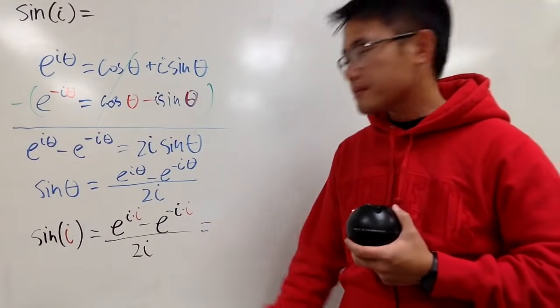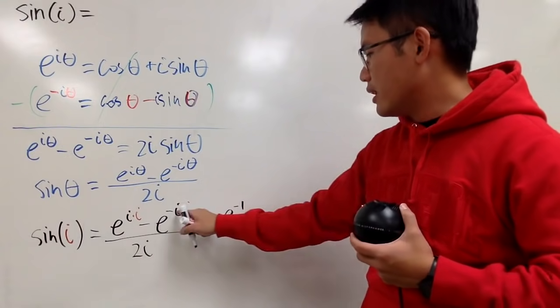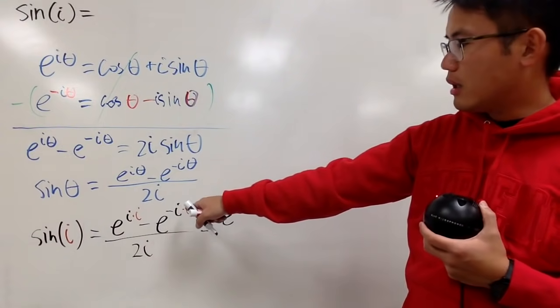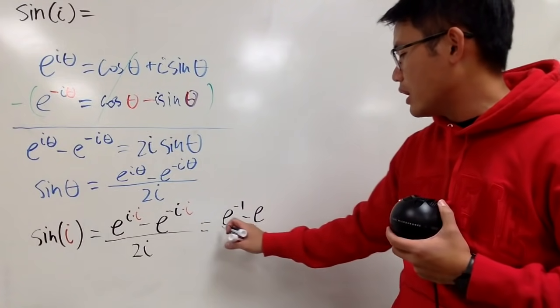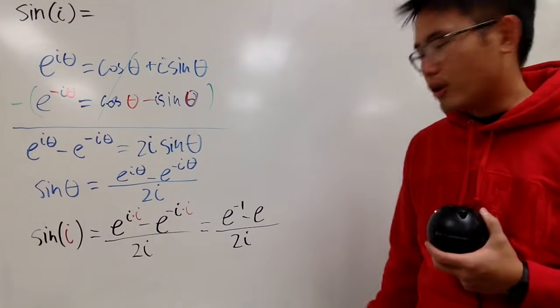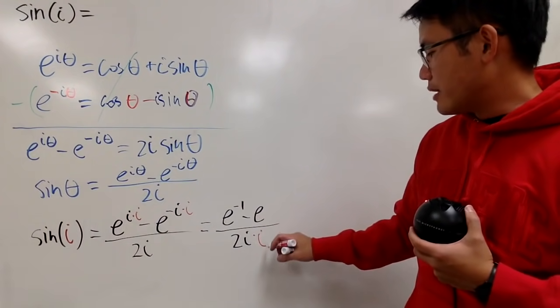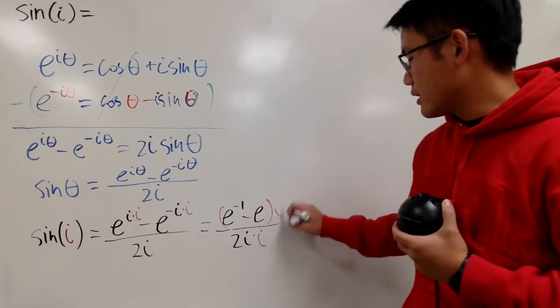So let's see what do we get. Negative 1 here, so we have e to the negative 1, and then negative 1 times negative is positive 1, so we have e to the negative 1 minus e to the first power, divided by 2i. As you guys know, I don't like i to be on the bottom. So let me multiply the top and bottom by i.